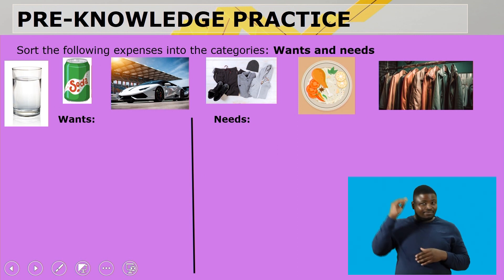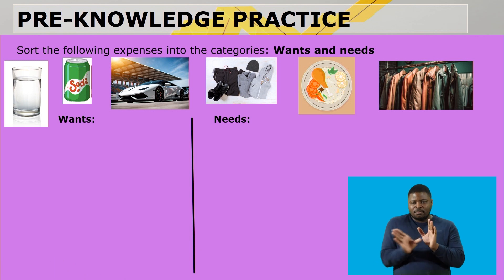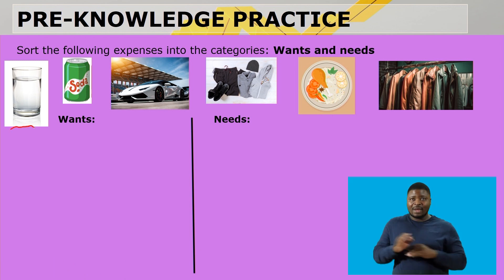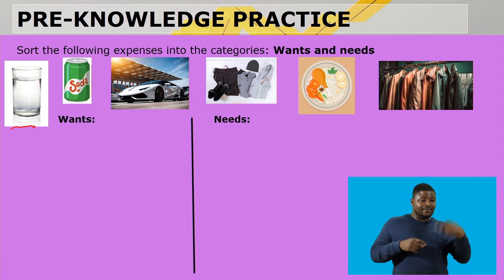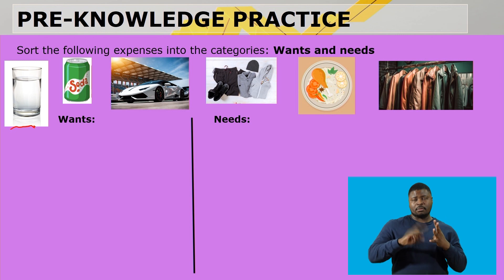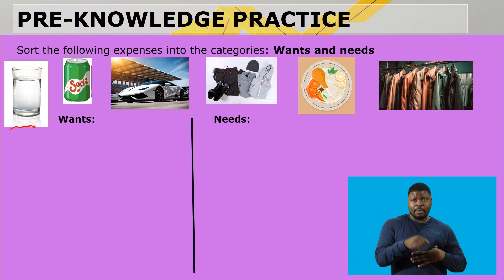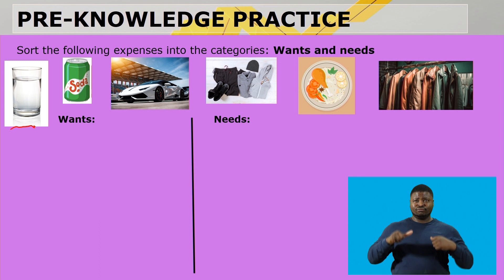Let's practice. Sort the following expenses into categories: wants and needs. We've got water, a can of soda, a flashy car, clothing, some food, and leather jackets — genuine leather jackets.